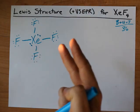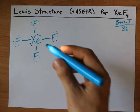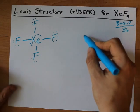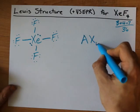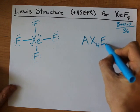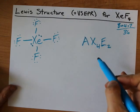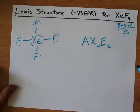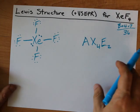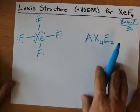If you're into VSEPR notation, you would call this AX4E2, because you have a central atom with four atoms connected to it and two lone pairs of electrons, or non-bonding pairs of electrons.